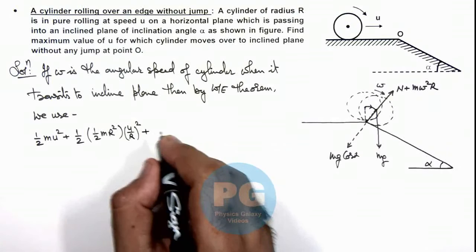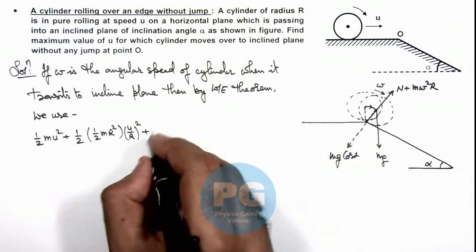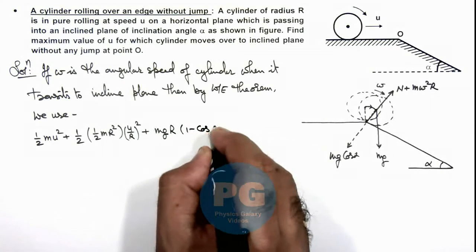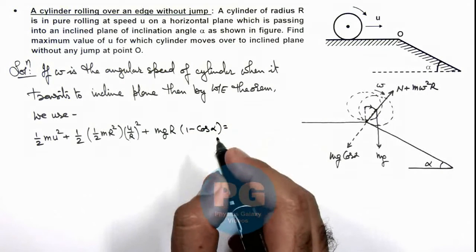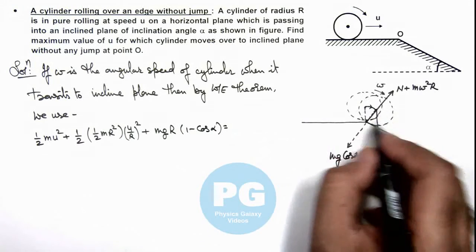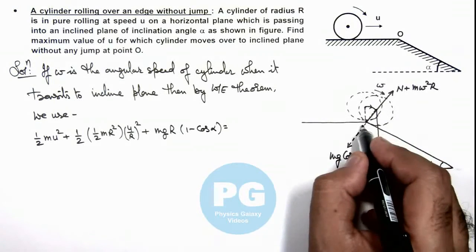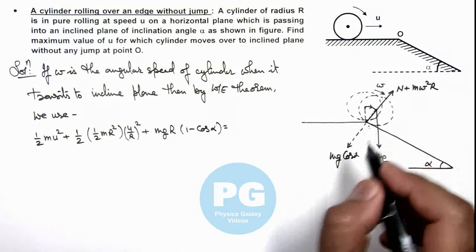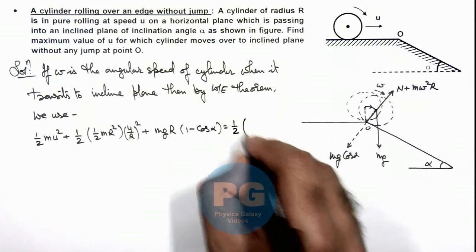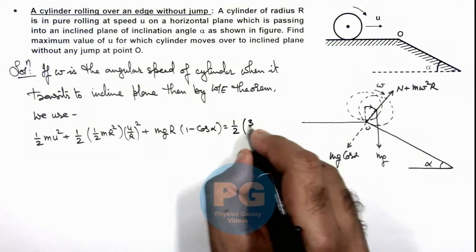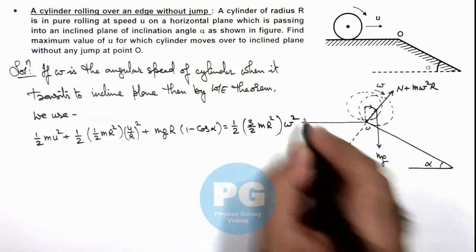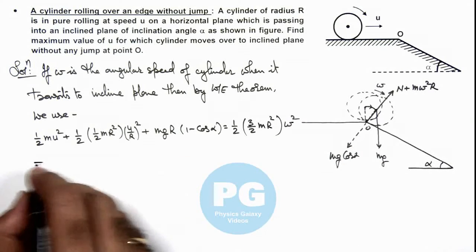Plus the work done by gravity in transiting is mg R times one minus cos alpha. This should be equal to the final rotational energy of the cylinder, as we can consider it is in pure rotation about point O. So this will be half its moment of inertia we can take as 3 by 2 m R squared about point O, multiplied by omega squared.